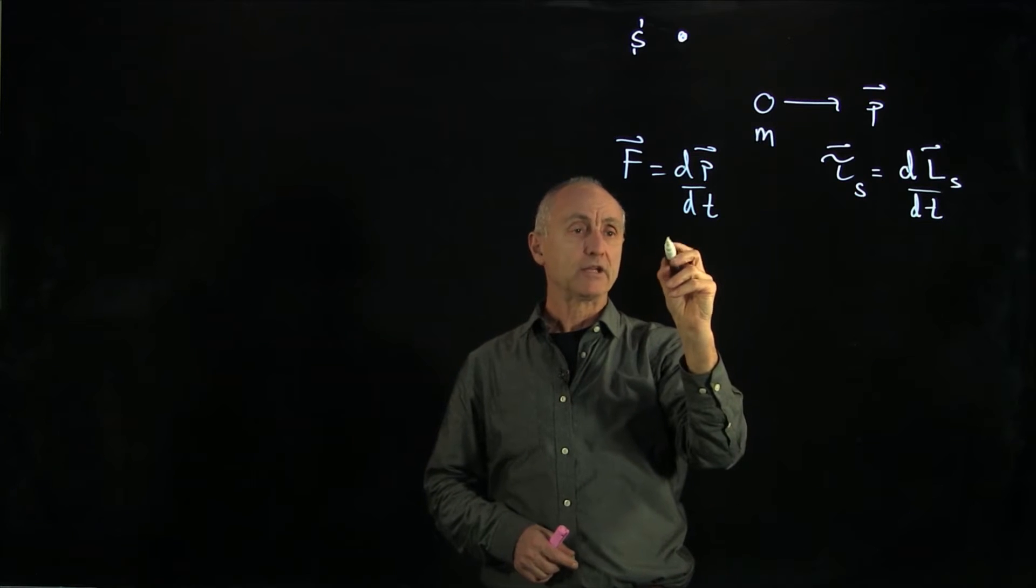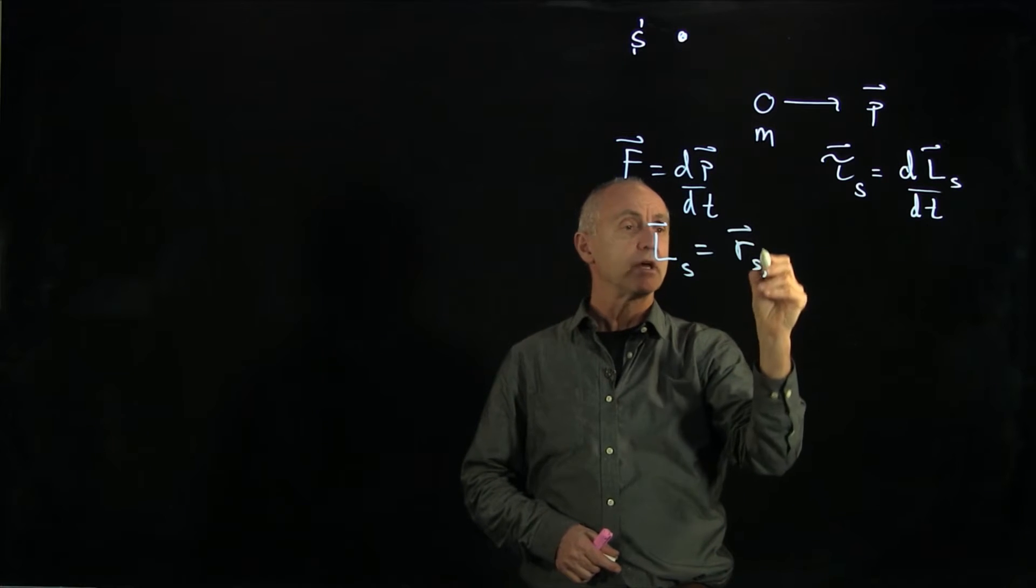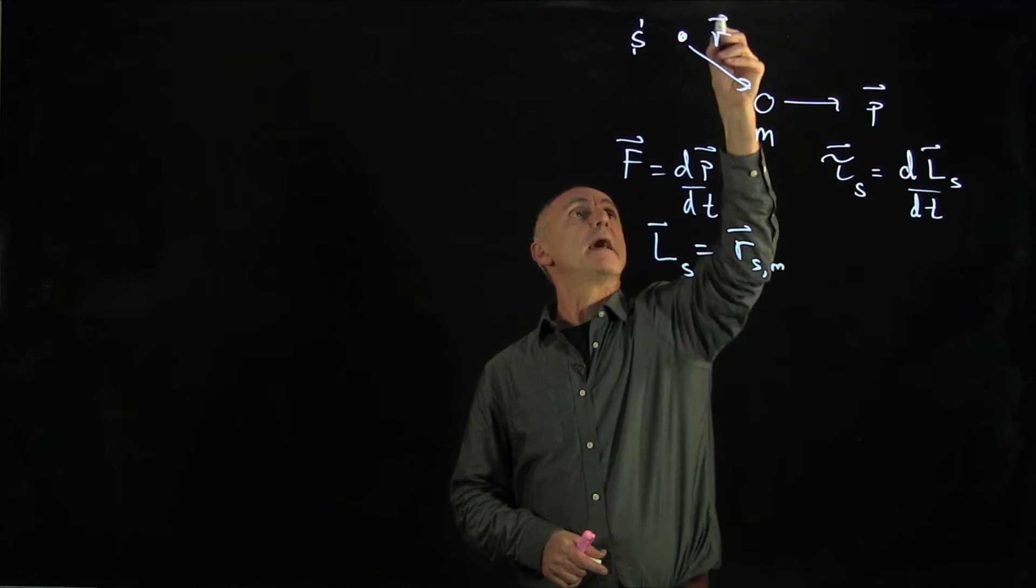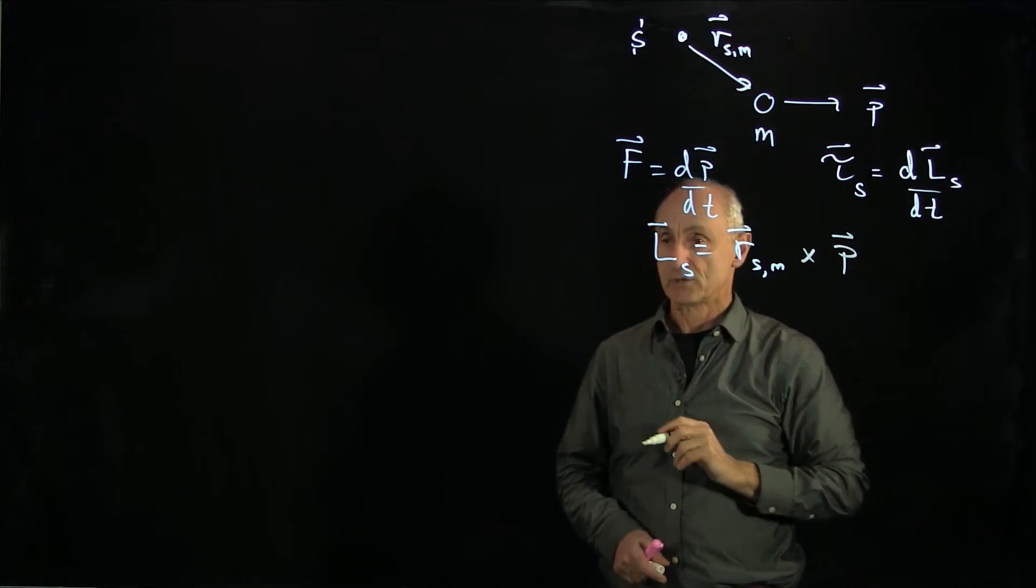Recall that angular momentum is defined to be about a point of vector s. And we'll indicate m to show that this is the vector from s to where the object is located across the momentum of the object.